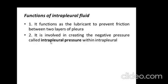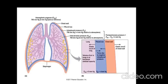The intrapleural fluid functions as a lubricant to prevent friction between the two layers of the pleura. It is also involved in creating the negative intrapleural pressure, which prevents the lungs from collapsing. Because the lungs are made of elastic tissue, they naturally tend to collapse. Intrapleural pressure together with surfactants — produced by type 2 pneumocytes — prevents this collapse.